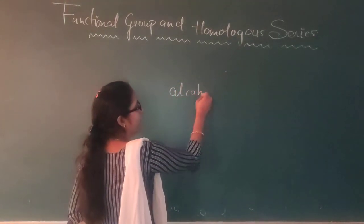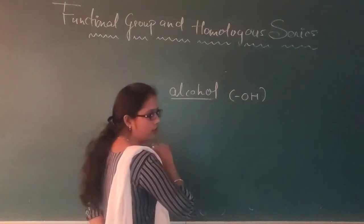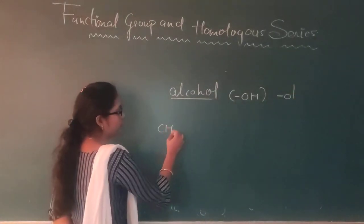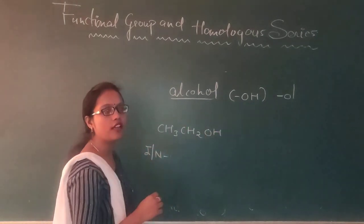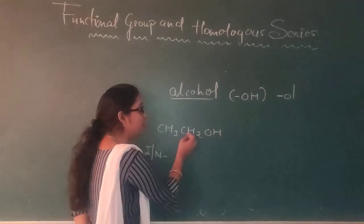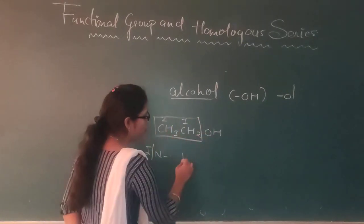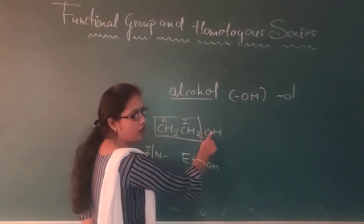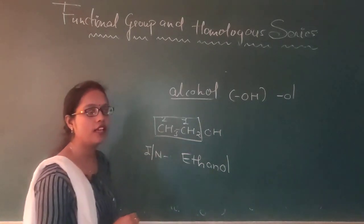Alcohol kab bologe? Jab aapko kisi bhi compound mein OH as a functional group dikhega. Aur jab bhi OH aayega, toh aap as a suffix 'ol' use karo ge. Now first compound is CH3–CH2–OH. Is ka IUPAC nomenclature karna hai. Toh first hum log numbering karenge — functional group se nearest carbon ko hum number one denge. One and two. Carbon chain ki length hai two — two carbon means 'eth', single bond means 'an', functional group OH means suffix 'ol'. Toh is ka naam kya ho jayega? Ethanol.